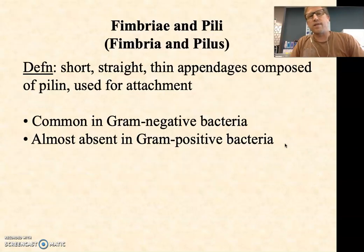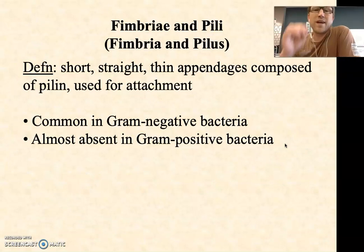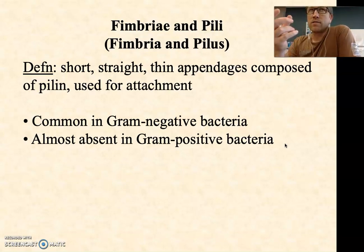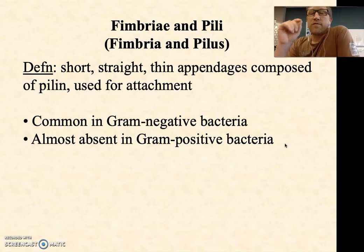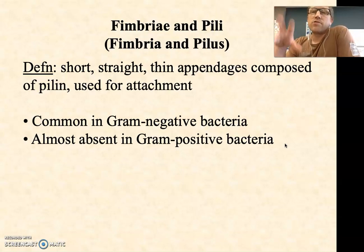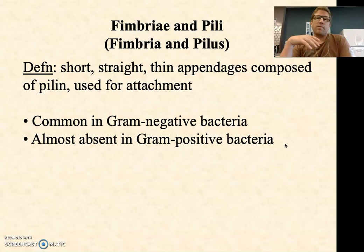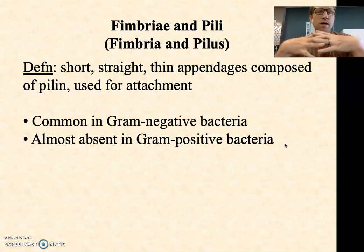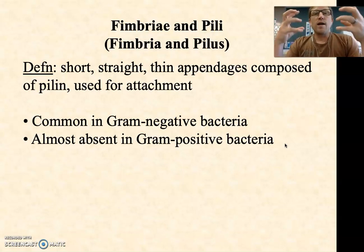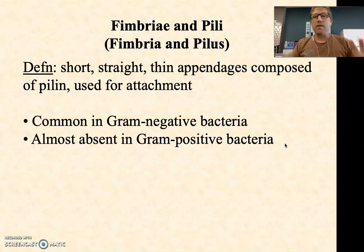Fimbriae and pili are both plural terms. Fimbria is one; pilus is one. They are short relative to the cell length and relative to the flagellum, straight unlike the flagellum, and very thin appendages. They're composed of a protein called pilin, or a class of proteins called pilins, and they're used for different forms of attachment in bacteria. They're very common in gram-negatives and almost absent in the gram-positives. We'll be getting to gram-negative and gram-positive terminology soon — it's a good mental way of categorizing different types of bacteria.